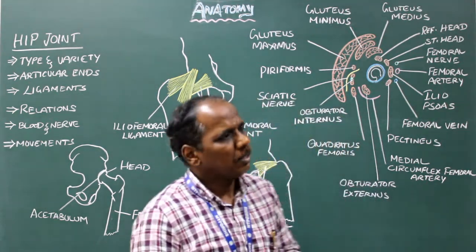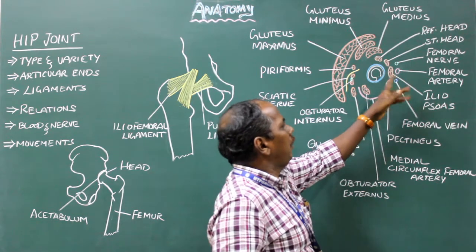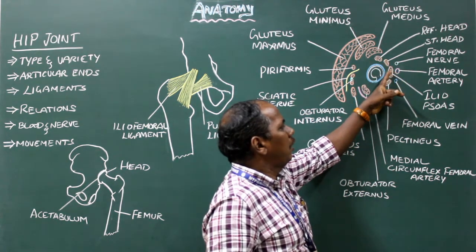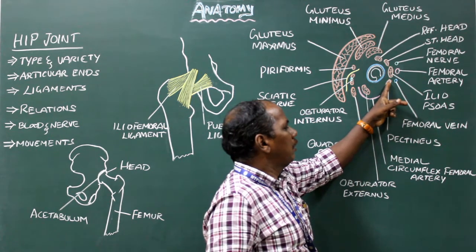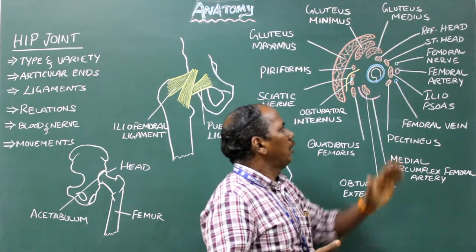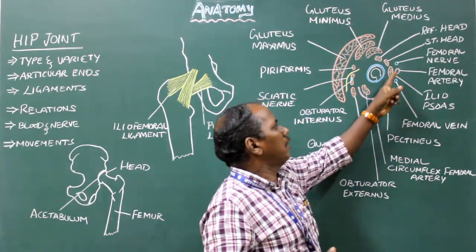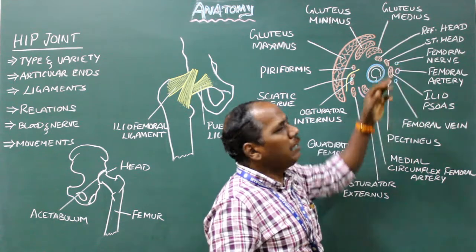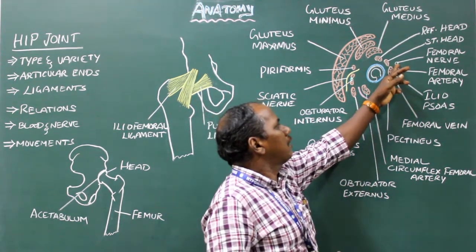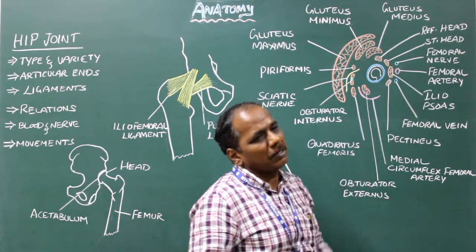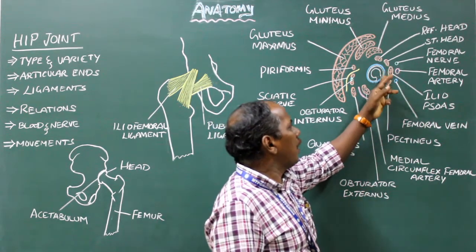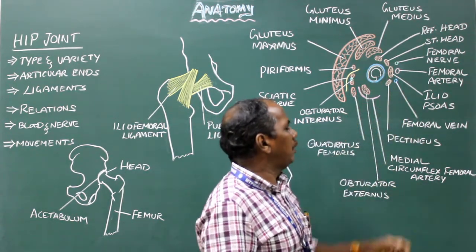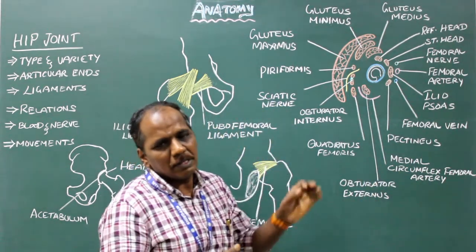Relations of the hip joint. Anteriorly, the hip joint is related to: the straight head of rectus femoris, iliopsoas, and pectineus. Anterior to these three structures there is the femoral nerve, artery, and vein. The femoral nerve is separated from the capsule by the straight head of rectus femoris. The femoral artery is separated from the capsule by the iliopsoas tendon. The femoral vein is separated from the hip joint by the pectineus muscle.